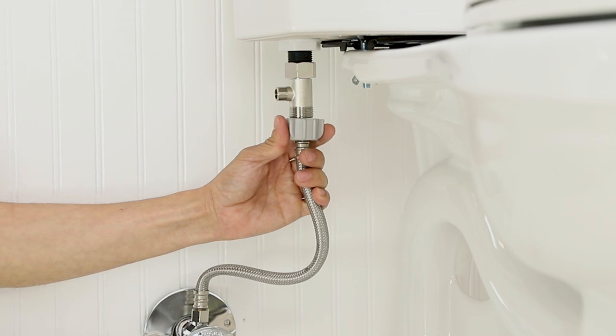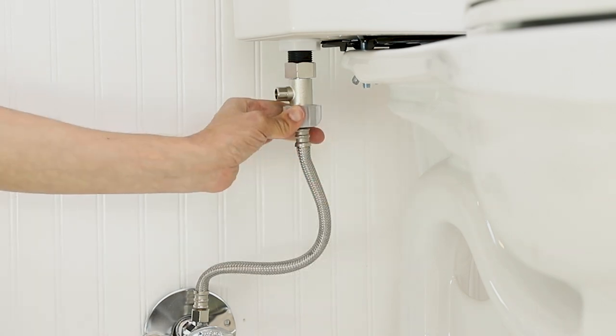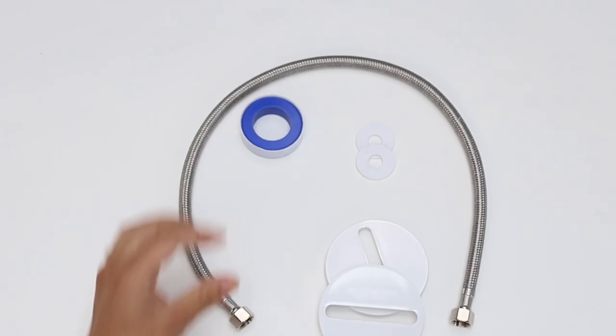Reconnect the flexible supply line to the bottom of the T-valve. It is recommended to apply plumber's tape.